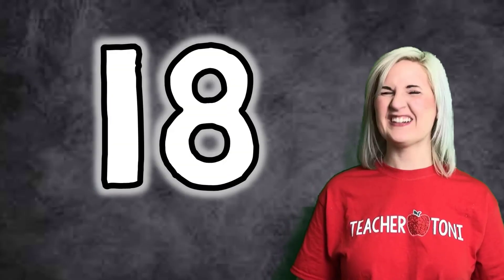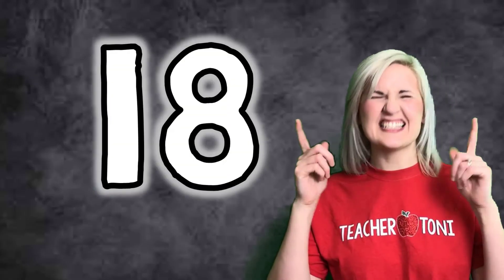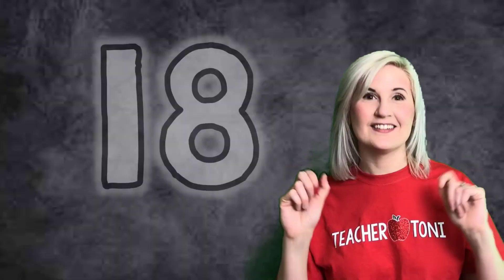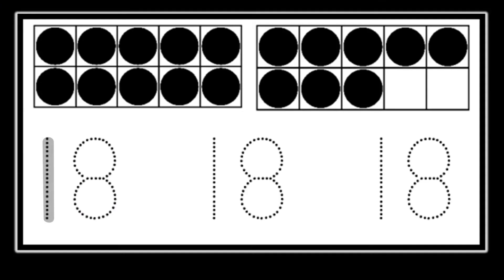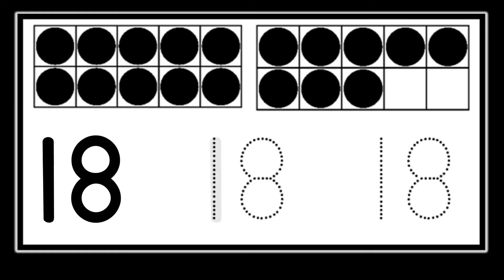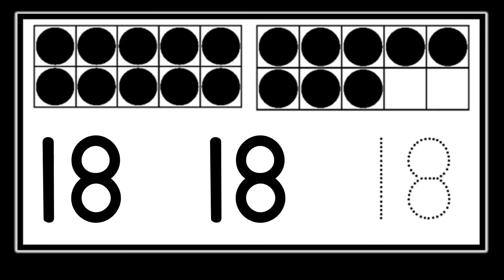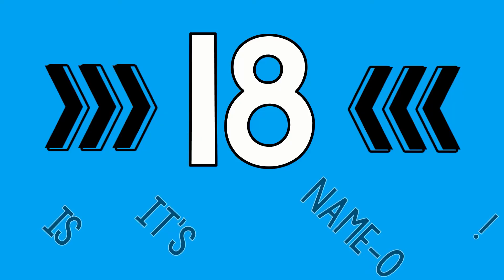Number 18. I can write a teen number. 18 is its name. Oh, 1, 8, 1, 8, 1, 8. 18 is its name.